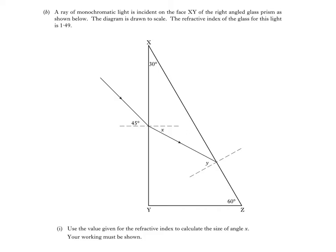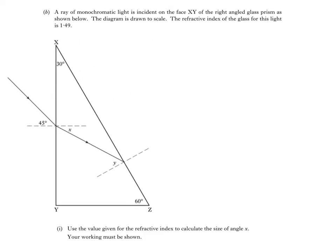Now, if we give ourselves more room to work, the equation to use is this one. Refractive index n is equal to sin theta 1 divided by sin theta 2. Where theta 1 is the angle in air and theta 2 is the angle in the medium, glass in this case.